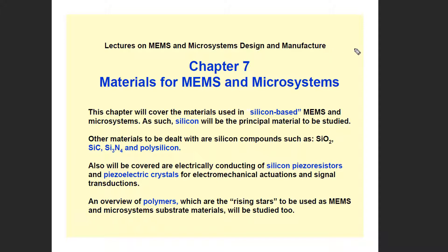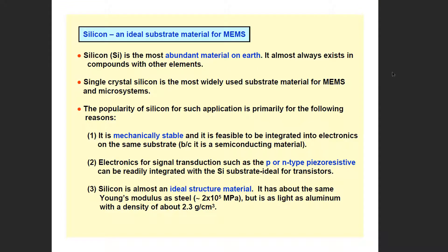For MEMS, we can use any type of materials. We have also used some materials for VLSI and IC fabrication. The first topic is silicon. It is an ideal substrate material for MEMS, and all IC fabrications use this imported material. The popularity of silicon for such applications is primarily for the following reasons.